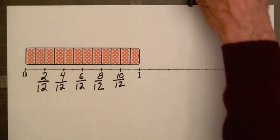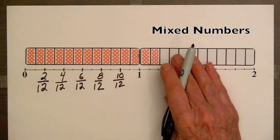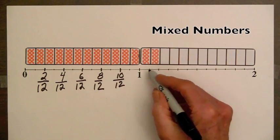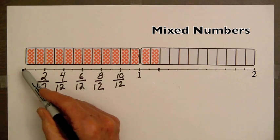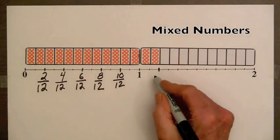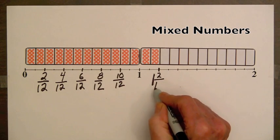Now, we can continue to use fraction bars to get the numbers for the marks between 1 and 2. So, this mark that's here is going to be 1 whole bar and 2 twelfths. So, we're going to write 1 and 2 twelfths.